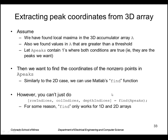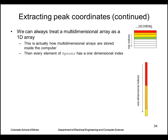Unfortunately, we can't just use find on the array and get back the coordinates in terms of three sets: row, column, and depth coordinate. For some reason, find was only implemented for two-dimensional and one-dimensional arrays. However, we can still do it because we can always treat a multi-dimensional array as a one-dimensional array — this is actually how they're stored in a computer. You can think of a two-dimensional array as a set of rows stacked up in order inside the computer.